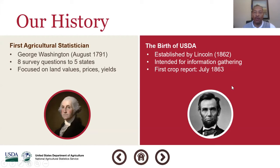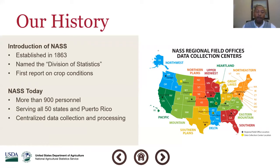This next graphic highlights the NASS field footprint. We're aligned with 12 regional offices and 33 satellite offices across the United States. Our headquarters is here in Washington, D.C. We have roughly about 55 percent of our staff out in the field locations and 45 percent in Washington, D.C. There are 12 stars around the United States — if you look at Austin, Texas, that's where our Southern Plains regional office is located, encompassing Texas and Oklahoma.